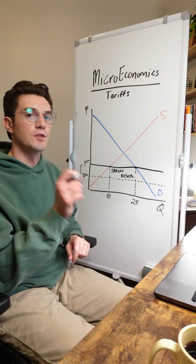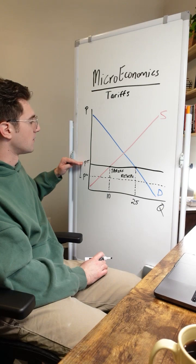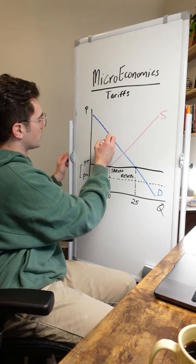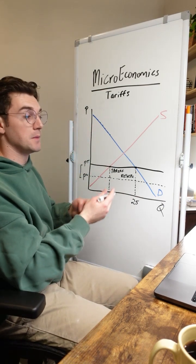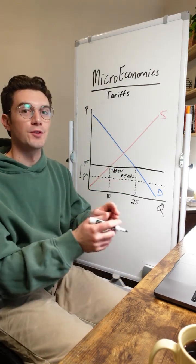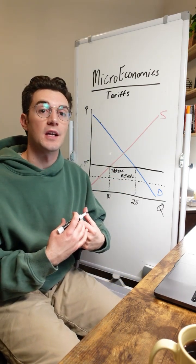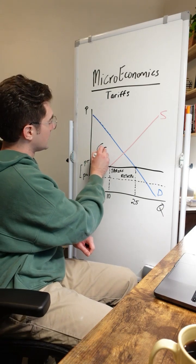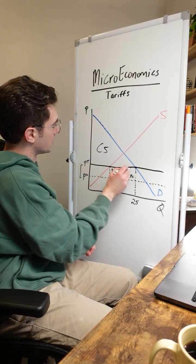Let's move into consumer and producer surplus. At this price now, all of these consumers along the demand curve lying above the tariff price are going to be buying the good and achieving all these vertical lines worth of consumer surplus on an individual scale. When we sum those together, we get this big triangle right here of consumer surplus.